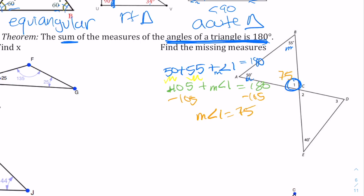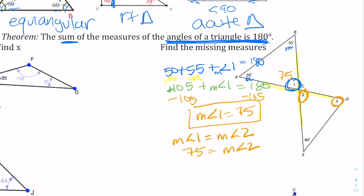Your work should look something like this — you need that equation setup to get your answer. We're not done because it says find the missing measures; angle two and angle three are also missing. Angle one and angle two have a relationship — they are vertical angles. There was a theorem that vertical angles are congruent, so the measurement of angle one equals the measurement of angle two. Since one is 75, the measurement of angle two is also 75.